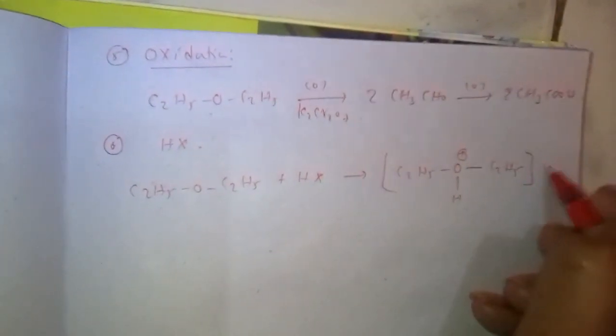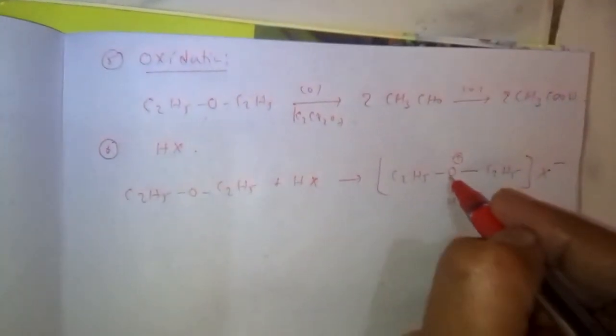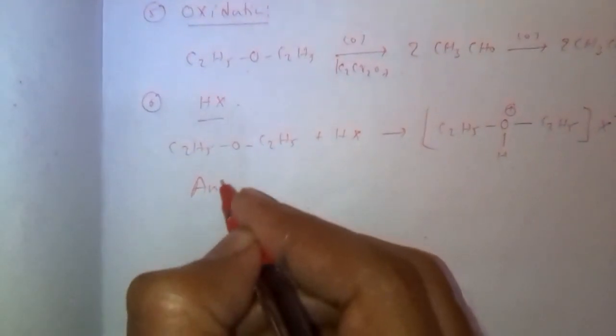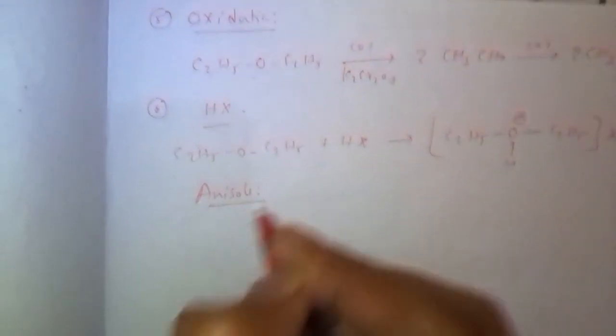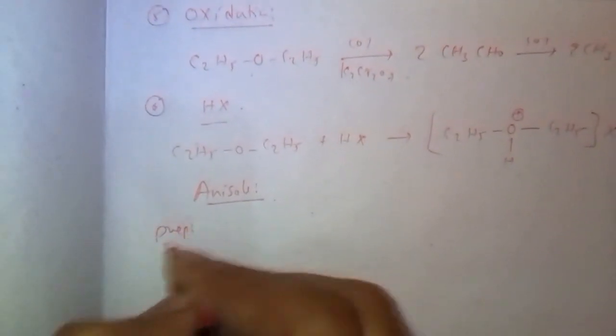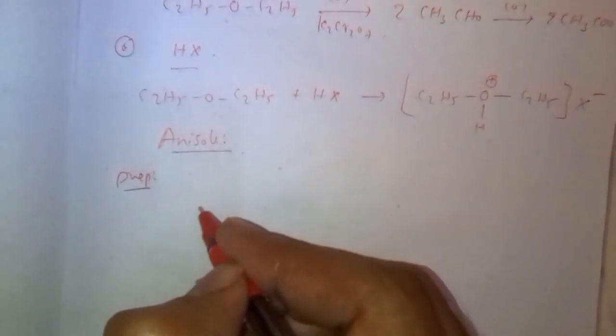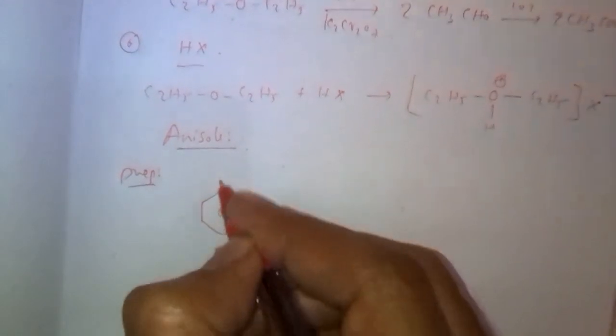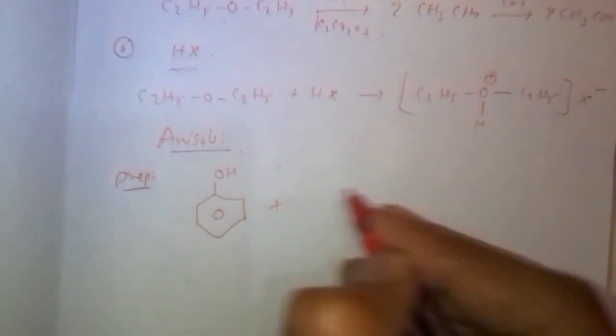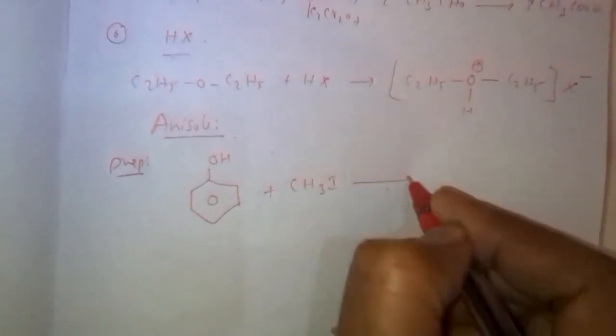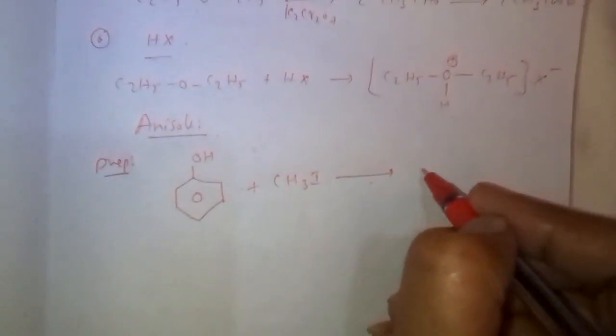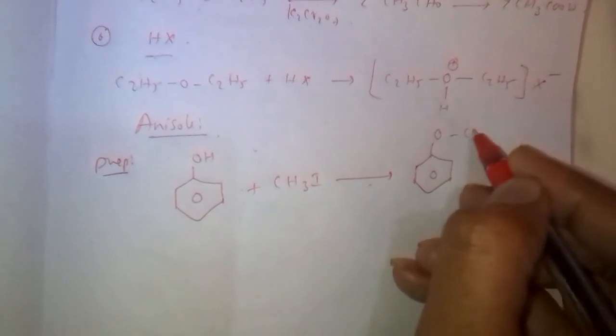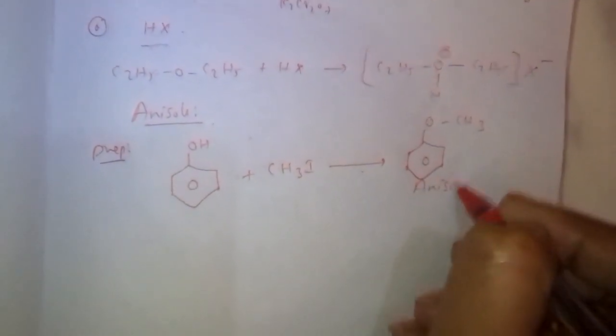Next, anisole. Anisole preparation. Phenol reacts with methyl iodide CH3I, then it gives rise to methylation takes place, here OCH3. This compound is known as anisole.